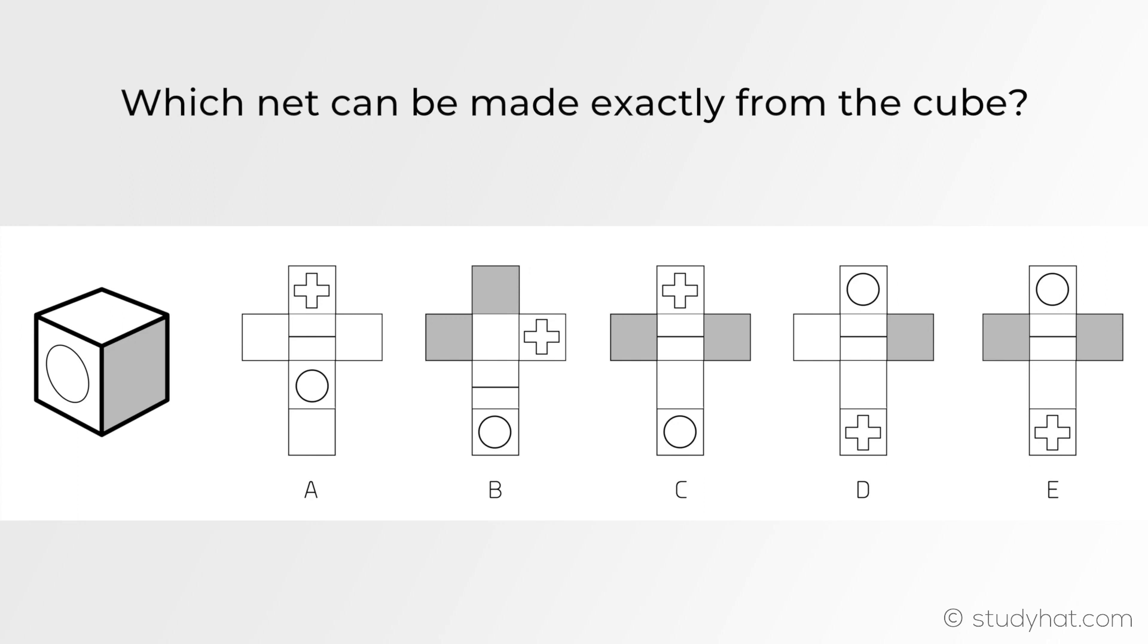The first question says which net can be made exactly from the cube? What you have to imagine now is the cube being opened up into a net and figuring out where each face will be positioned.